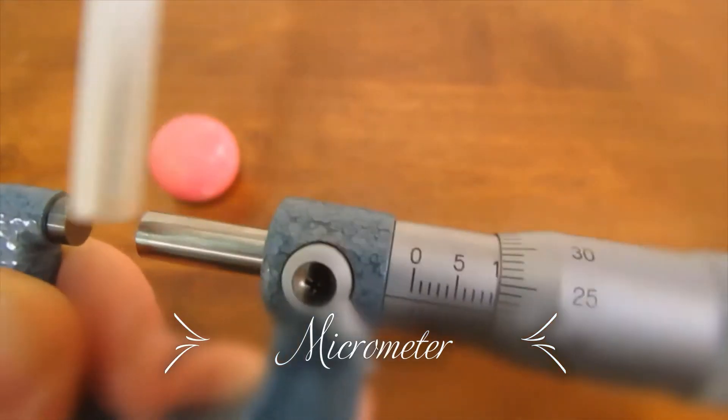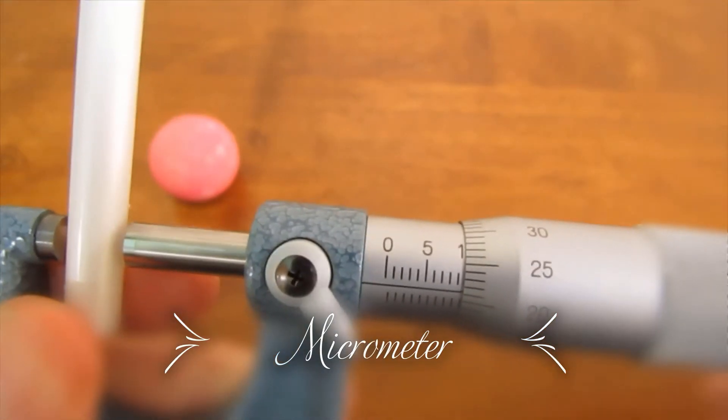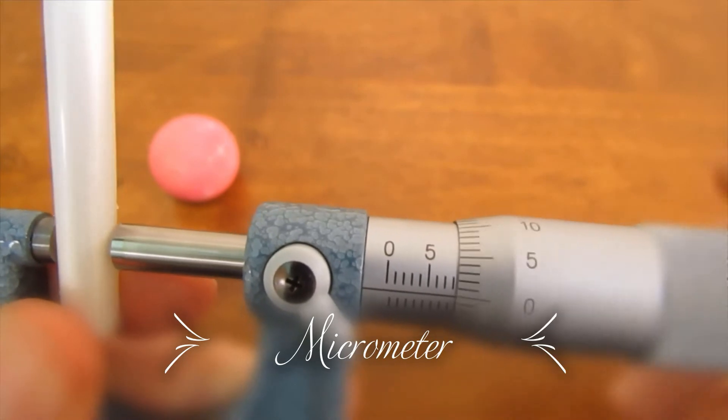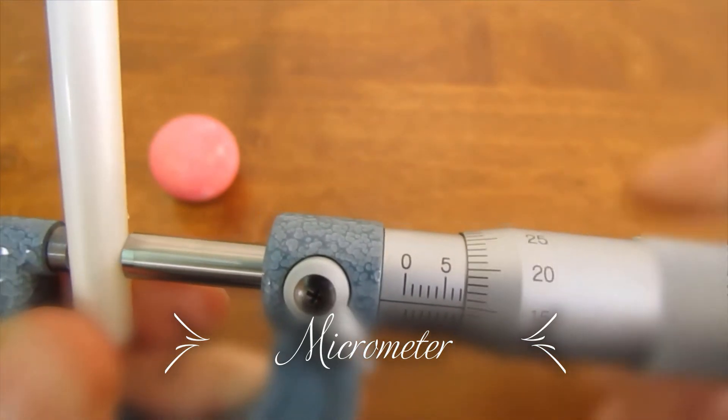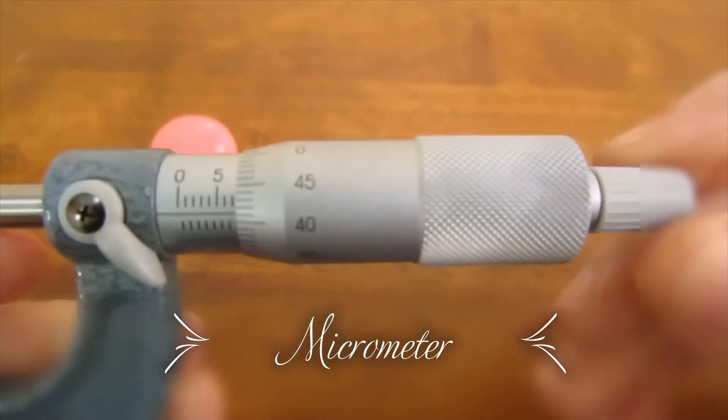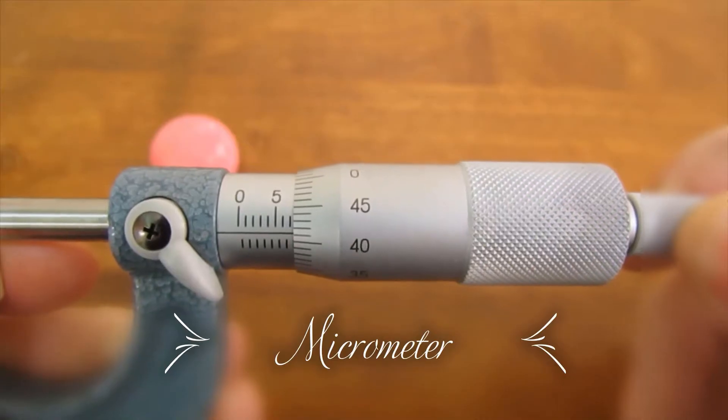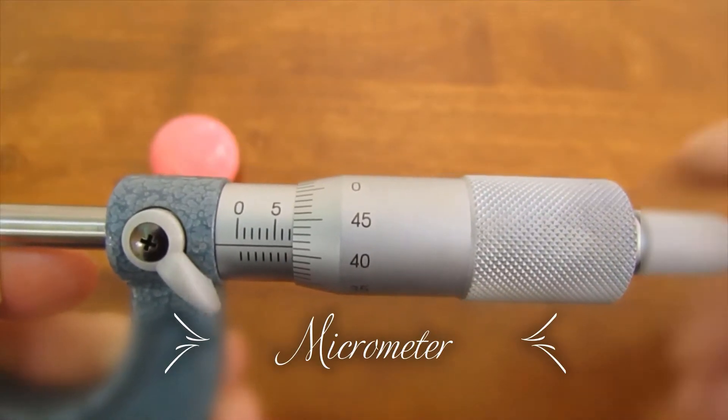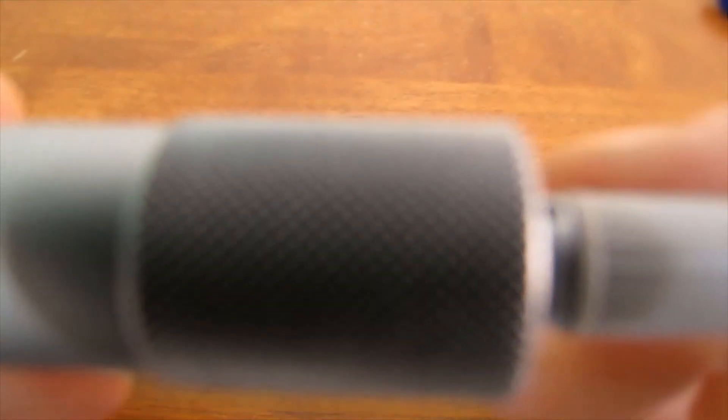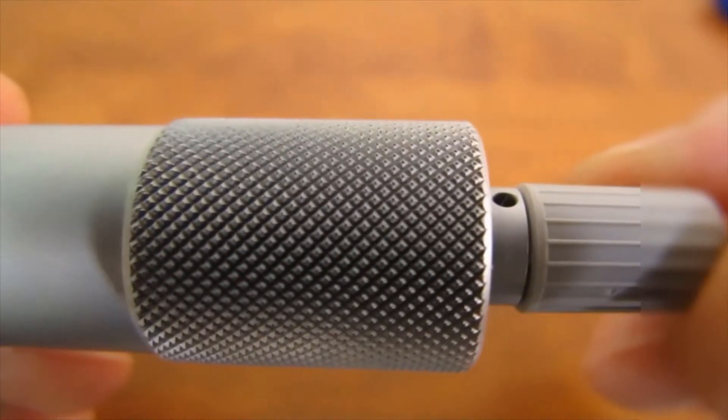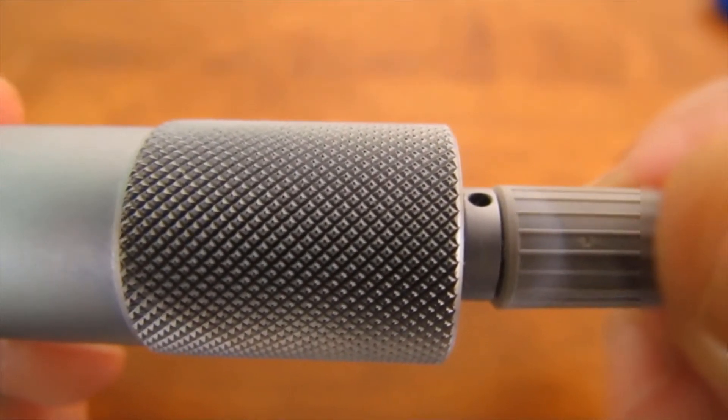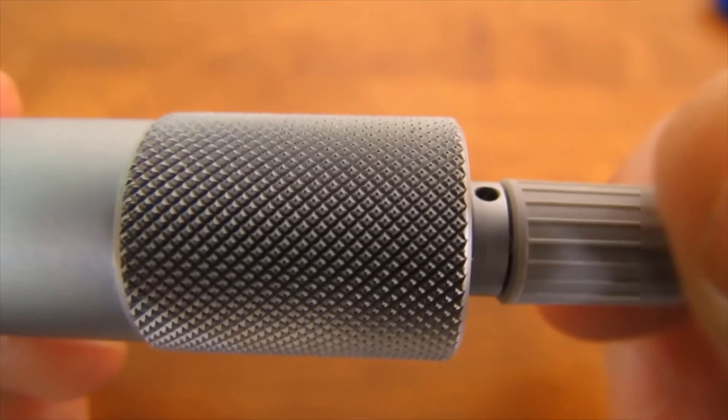The object to be measured is placed between the anvil's face and the spindle's face. The ratchet is turned clockwise until the object is held between these two surfaces. And when the ratchet makes a clicking noise, this means that it cannot be tightened anymore and that the measurement can be taken.